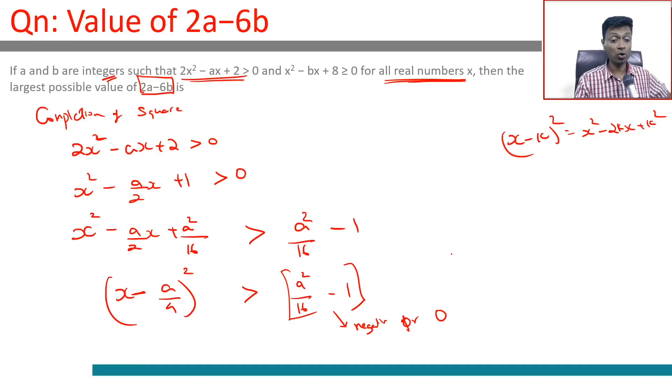(x - a/4)² > 4 will not always hold good. (x - a/4)² > -3 will always hold good. So a²/16 - 1 should be less than 0. It cannot even be equal to 0, because if this were equal to 0, then (x - a/4)² is always greater than 0, which won't hold good. Because if x is a/4, this will become 0. Then this number should be negative, or a² < 16.